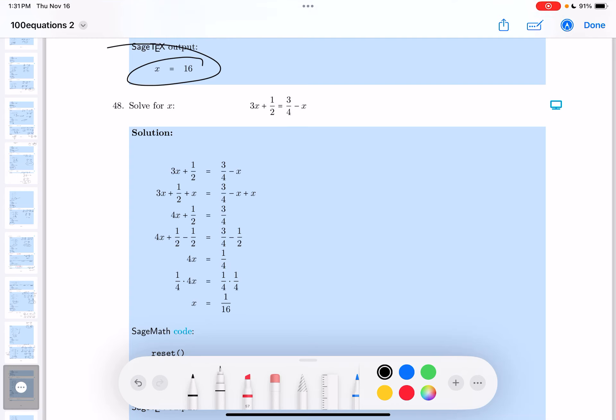Okay, number 48. I'm looking at it. Let's write it down. It's going to be 3x plus 1/2 equals 3/4 minus x.